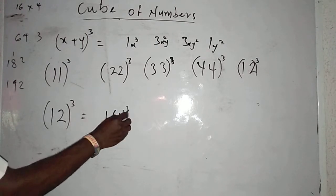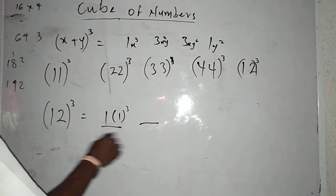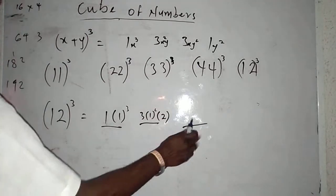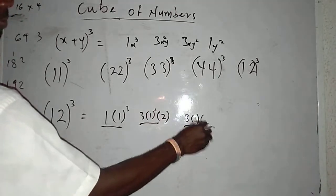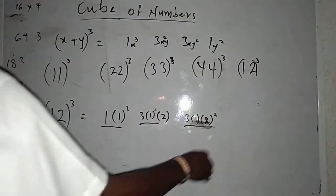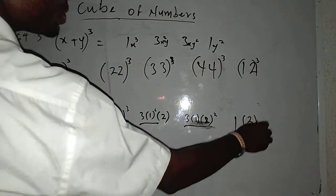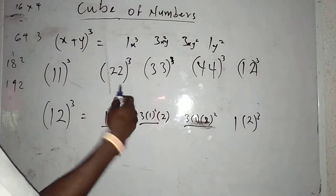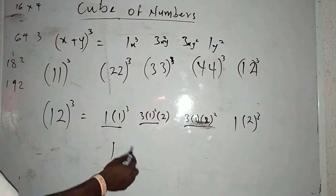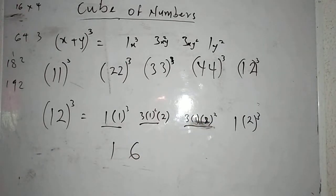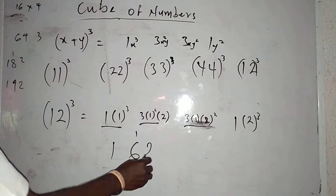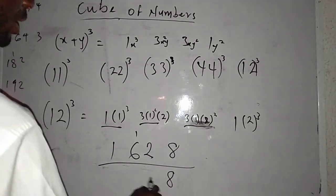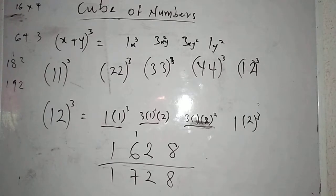Now 12 raised to power 3. My x is 1 and y is 2. Second stand: 3 bracket of 1 squared bracket of 2. Third stand: 3 bracket of 1 bracket of 2 squared. Last stand: 1 bracket of 2 raised to power 3. Now 1 times 1 times 1 is 1; 1 times 1 times 2 times 3 gives 6; 4 times 3 gives 12; and 2 cubed is 8. My final answer is 1, 7, 2, 8 — so 12 cubed equals 1728.